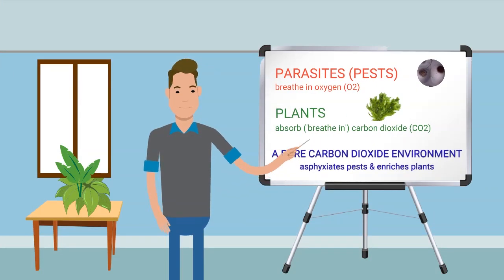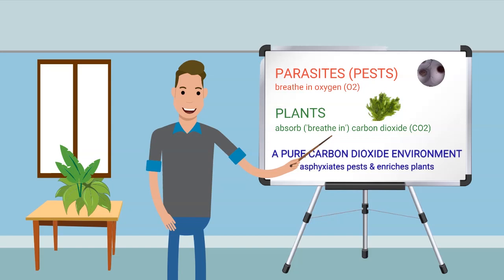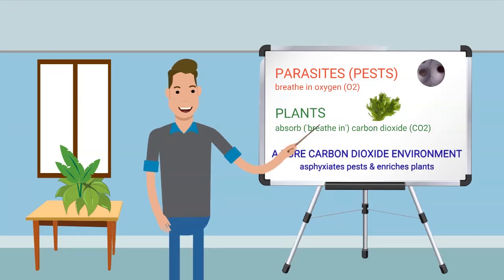Chemical-free reverse respiration exploits the difference in the way plants and parasites breathe. Parasites breathe in oxygen and plants absorb carbon dioxide. A pure CO2 environment asphyxiates pests and enriches plants.